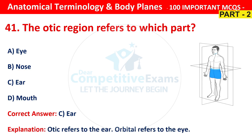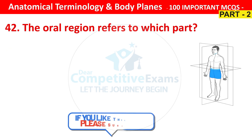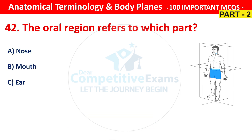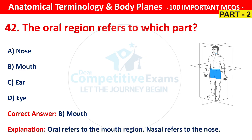Question number 41. The oral region refers to which part? Your options are nose, mouth, ear or eye. The correct answer is B, that is mouth. Oral refers to the mouth region, and nasal refers to the nose.